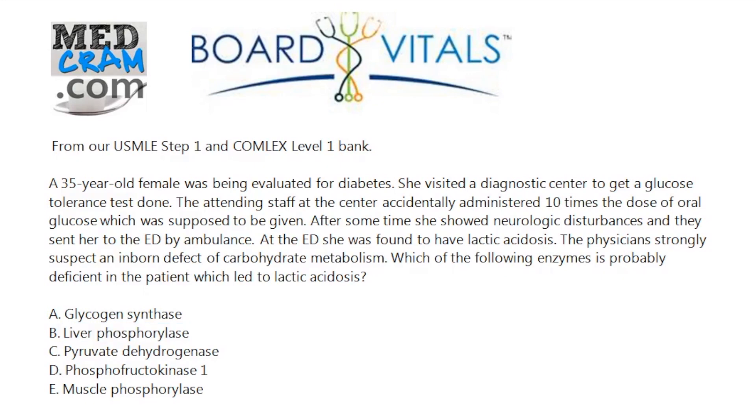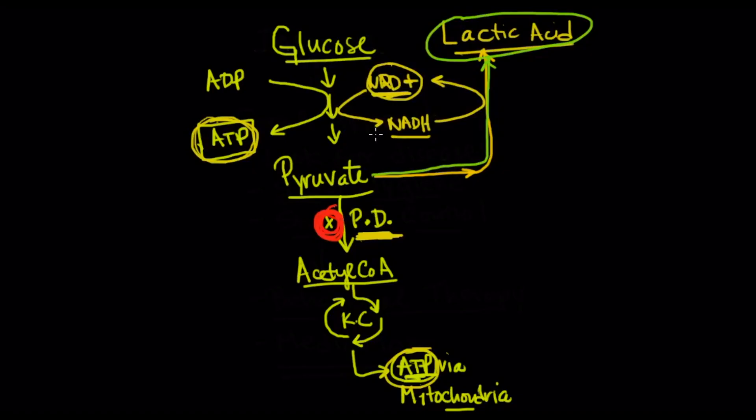With phosphofructokinase 1, the thing you've got to remember is that the issue is further up here in glycolysis, because phosphofructokinase 1 is the rate-limiting step for the pathway of glycolysis. So what you actually see is a buildup of glycogen. You see actually very low levels of pyruvate and therefore lactic acid with exercise, and actually exercise tolerance is impaired.